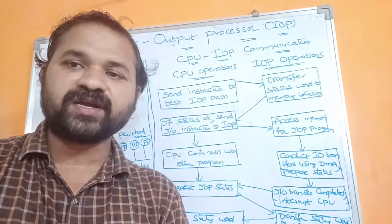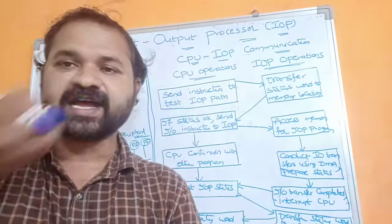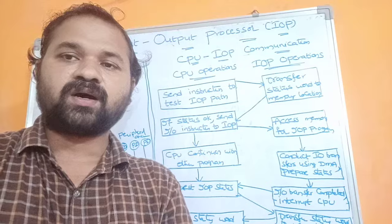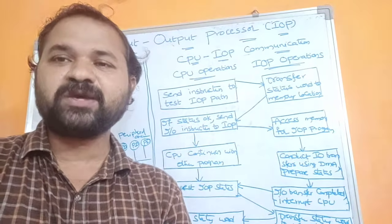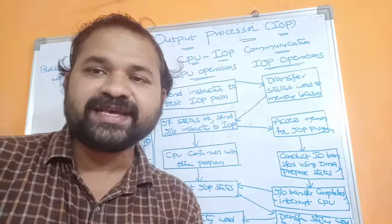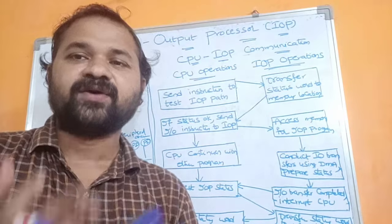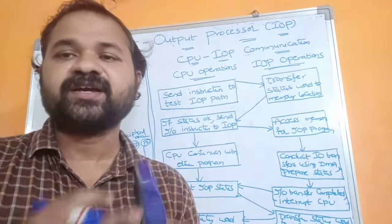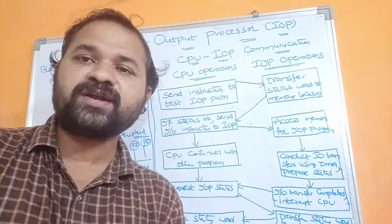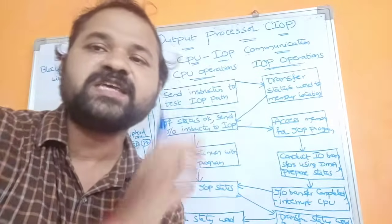Till now, in order to transfer the data between I/O devices and memory, we use the CPU. But we know that CPU is extremely faster and mainly useful for computation purposes — that is, for executing the instructions. However, till now in order to transfer the data between I/O devices and memory, we use the CPU only.